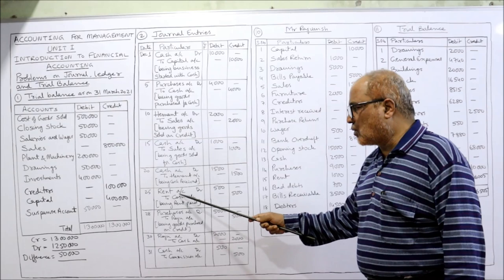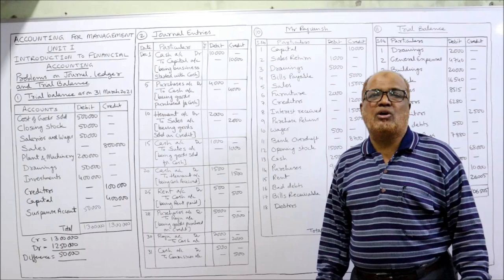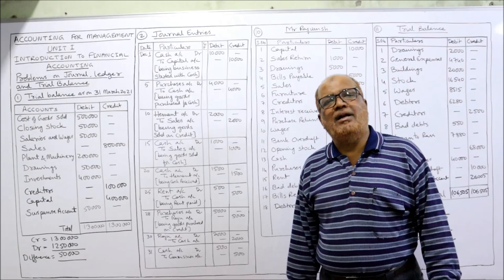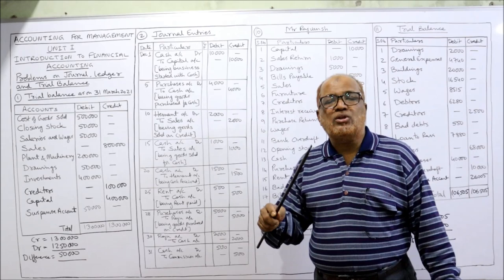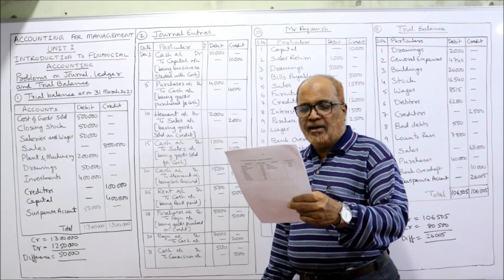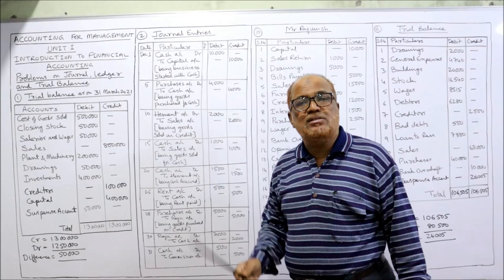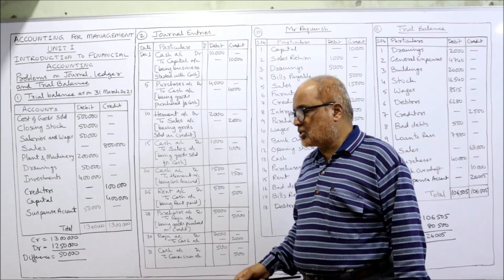Twenty-eighth: purchased goods from Raju — it's a credit purchase because a name is given. When we purchase goods, purchases account should be debited. Raju is the giver. Entry: Purchases account Dr. 5,000 to Raju 5,000. Narration: being goods purchased on credit. Next, cash paid to Raju — cash is going out, so cash should be credited. Raju is the receiver. Entry: Raju account Dr. to Cash 2,000.